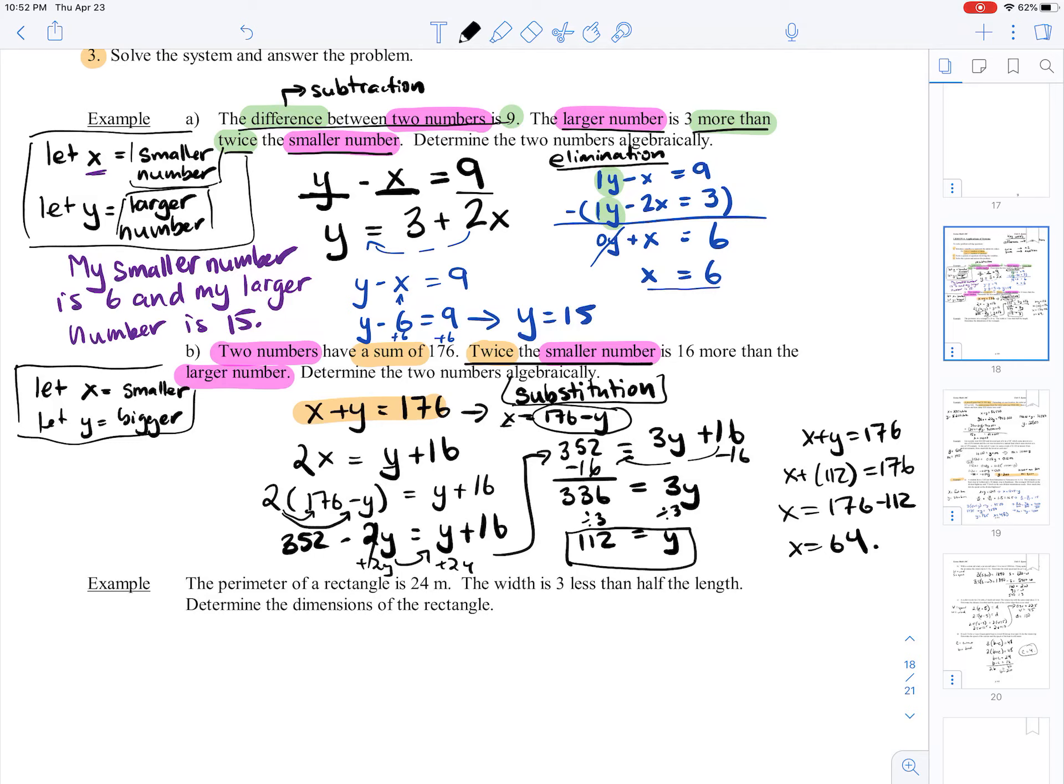So x equals 64 and y equals 112. So my smaller number is 64 and my larger number is 112.